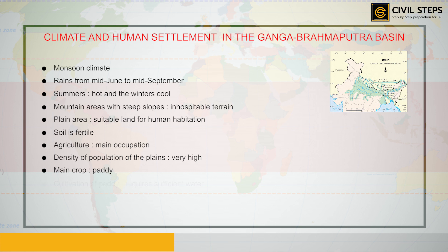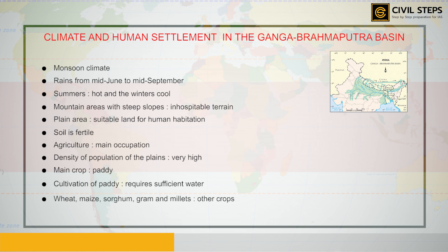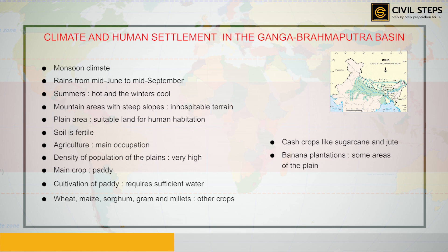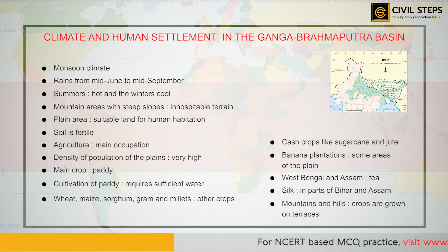The main crop grown here is paddy, which requires sufficient water and is grown where rainfall is high. Wheat, maize, sorghum, gram, and millets are other crops grown here. Cash crops like sugarcane and jute are also grown. Banana plantations are seen in some plain areas. In West Bengal and Assam, tea is grown in plantations. Silk is also produced through the cultivation of silkworms in parts of Bihar and Assam. On mountain and hill slopes where gradients are gentle, crops are grown on terraces.